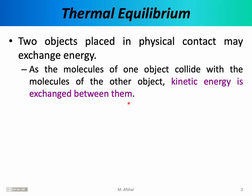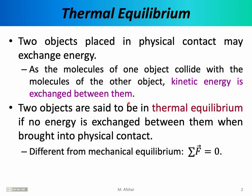On a very microscopic level, energy might flow from object A to object B or vice versa, but on a large scale, on the average, we might notice a flow of energy from one object to the other through these molecular collisions. This doesn't have to happen all the time — sometimes the net energy of an object remains exactly the same before and after physical contact. Two objects are said to be in thermal equilibrium if no energy is exchanged between them when brought into physical contact.